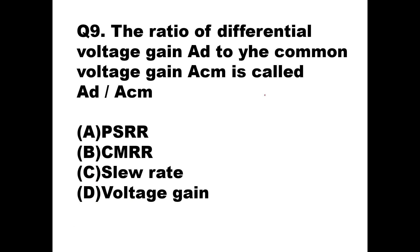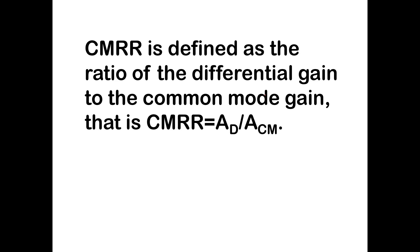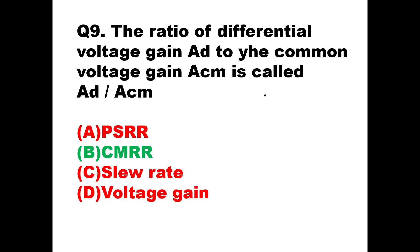Question number nine: the ratio of differential voltage gain AD to common mode voltage gain ACM is called what? If you take the ratio of differential gain upon common mode gain, it gives you the common mode rejection ratio, CMRR. CMRR is defined as AD / ACM. So option B, CMRR, is the right answer.